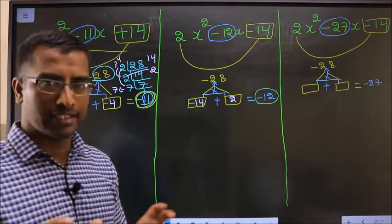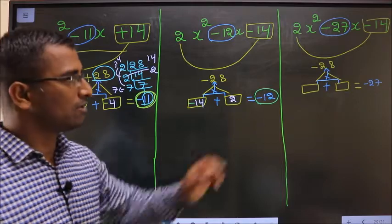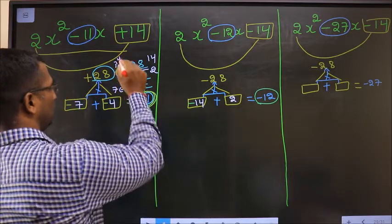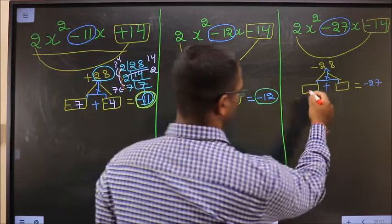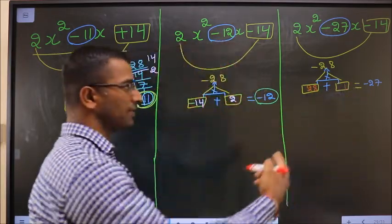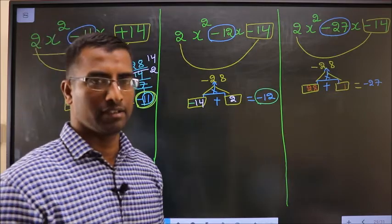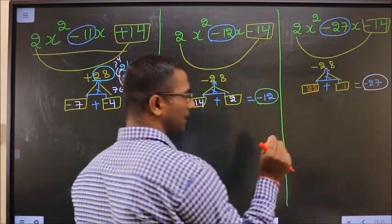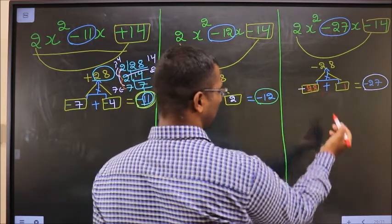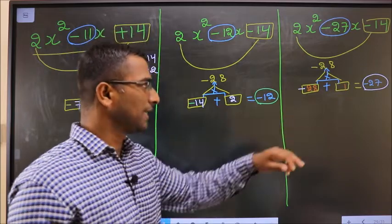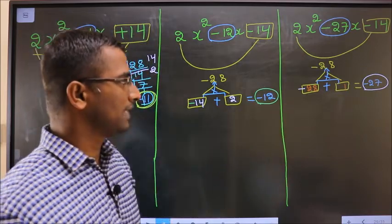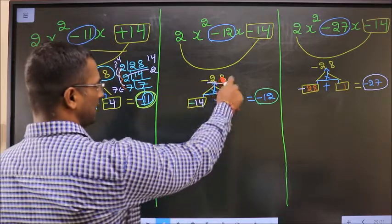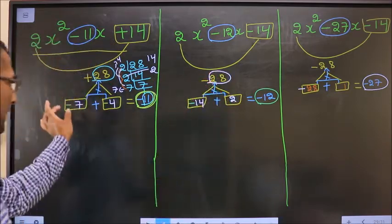For the third expression, the two numbers are 28 and 1, since 28 - 1 = 27 and 28 × 1 = 28. Adjusting signs: minus 28 + 1 = minus 27, and minus 28 × 1 = minus 28. Notice it is the same product 28 in all three cases, but we select different pairs of numbers — that is the key difference this video wants you to understand.